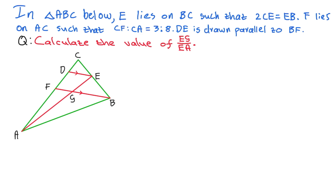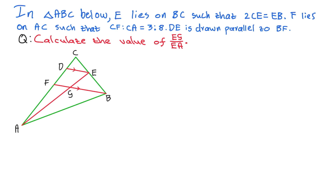So let's go straight to this question. They say in triangle ABC, E lies on BC. Let's look at E — E is right here, it lies on BC.